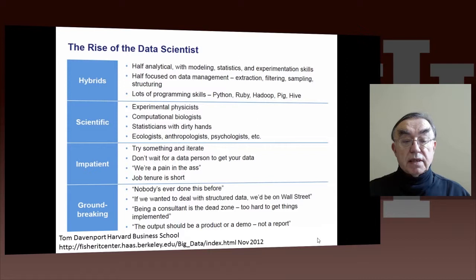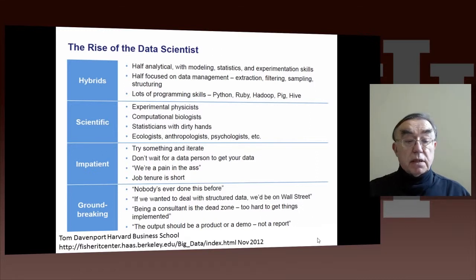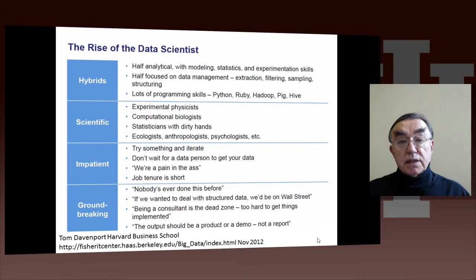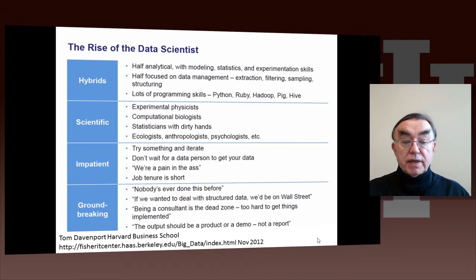The last two comments are about impatience. Data science is a disruptive technology — it's changing very fast, and it's better to do something quickly than to do it more carefully and take a long time. So time to completion is pretty important. The other comment is that this is groundbreaking, disruptive technology that is going to break new areas open.